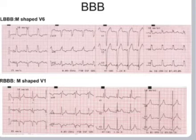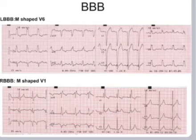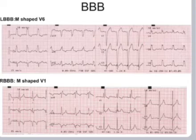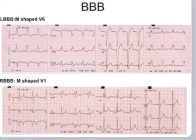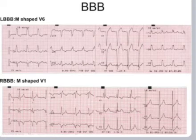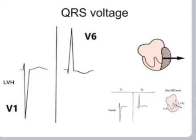In LBBB (left bundle branch block), you see a QS complex in V1 with ST elevation and a notched R wave in Lead I with T wave inversion. In RBBB (right bundle branch block), you see an RSR' pattern in lead V1 and an S wave in Lead I — sometimes described as an M-shape in V1. Some describe M-shape in V6 for LBBB and M-shape in V1 for RBBB, but this is a crude and unreliable method. In LV hypertrophy, there is a deep S wave in V1 and a tall R wave in V6.